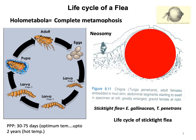In complete metamorphosis, there is no morphological similarity between the adult, the larva, or the larva with the pupa — each stage looks entirely different. After mating, the female flea will lay eggs, around 300 to 400 eggs in total.